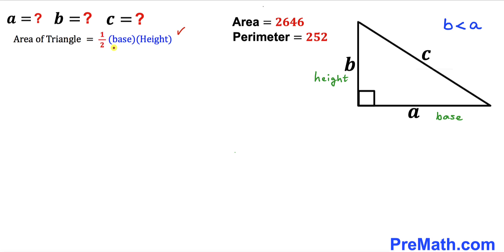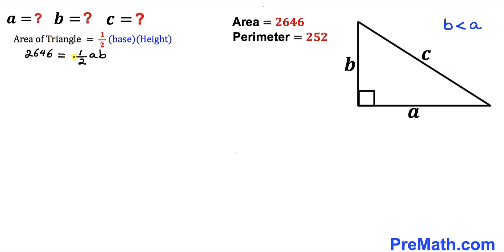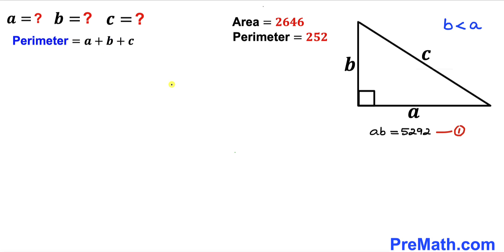Area equals one-half times base times height. In our case, A is our base and B is our height. So the area of the triangle, 2646, equals one-half times A times B. Multiplying both sides by 2, this gives us A times B equals 5292. Let's call this equation number one.